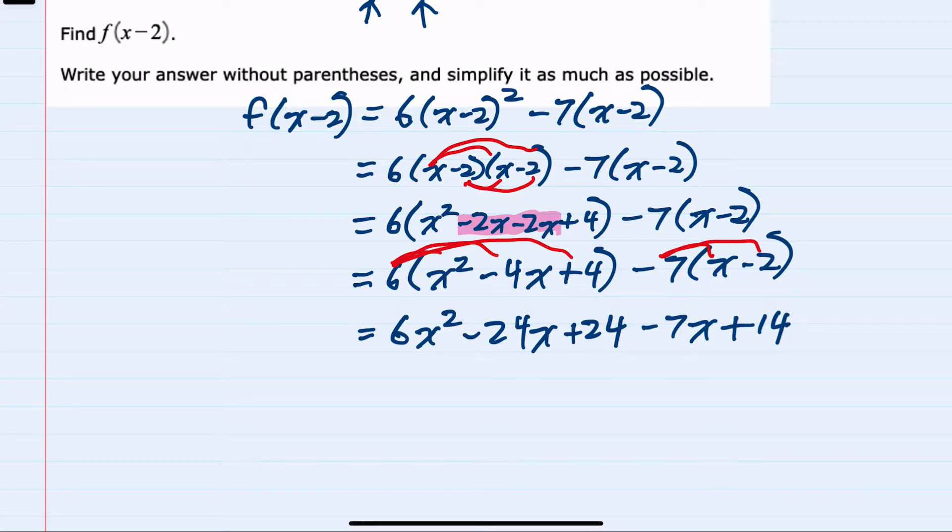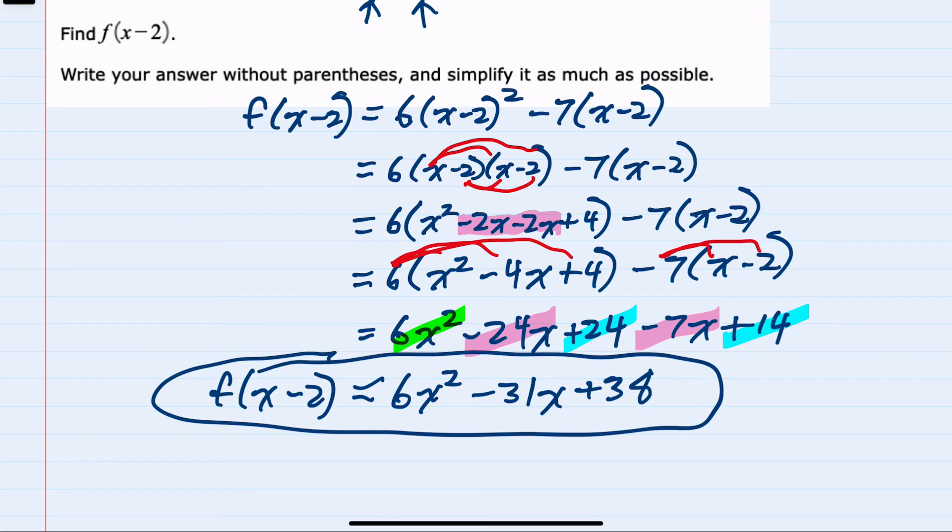And the only simplification left to do is just combining like terms. And since we only have one squared term, I'll bring that down. That will be our 6x squared. However we have a minus 24x and a minus 7x. Those can be combined as a minus 31x. And then we have two constants plus 24 and plus 14, those can be combined as a plus 38. So we have found f of x minus 2 and simplified as much as possible.